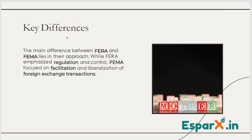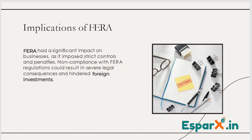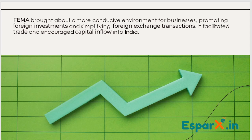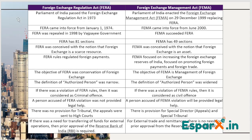Now what are the differences? The key difference was the approach. FERA emphasized regulation and control, whereas FEMA focused on facilitation and liberalization. FERA had a significant impact because of its strict control, while FEMA promoted foreign investment and simplified foreign exchange transactions.